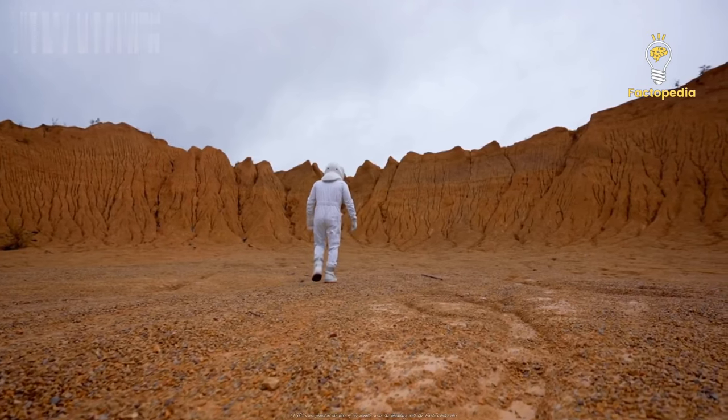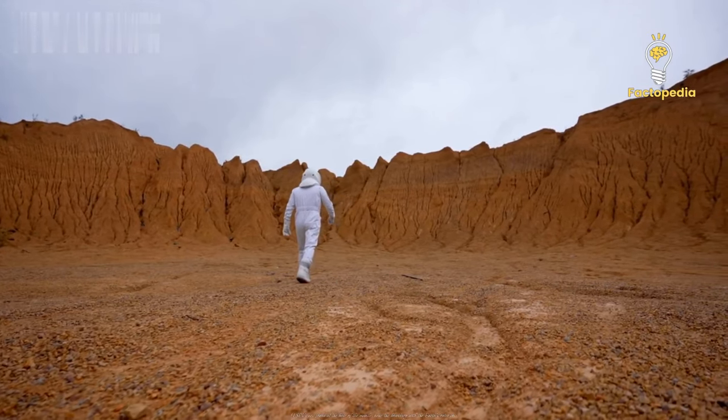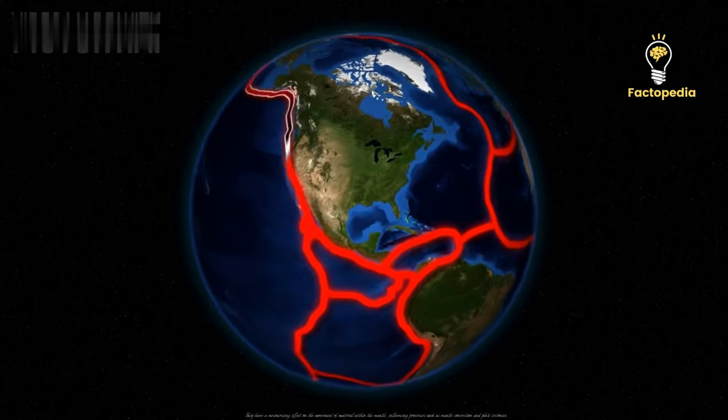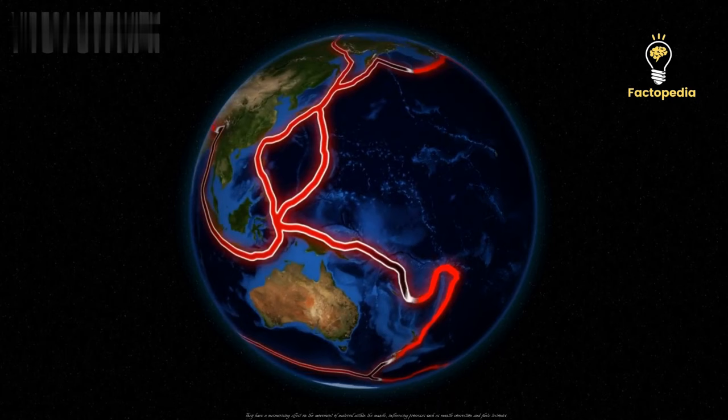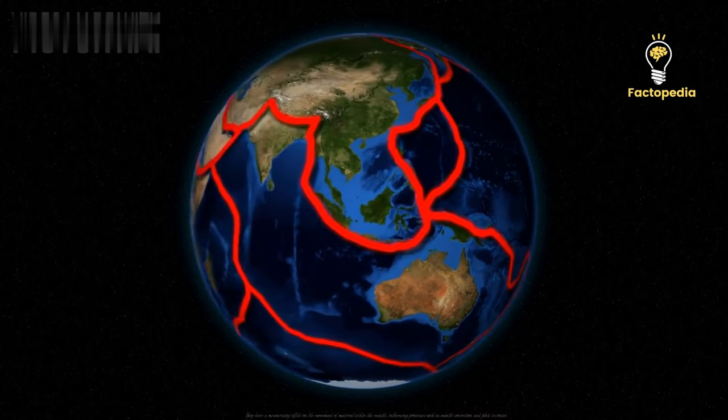LLSPVs are found at the base of the mantle, near the boundary with the Earth's outer core. They have a mesmerizing effect on the movement of material within the mantle, influencing processes such as mantle convection and plate tectonics.